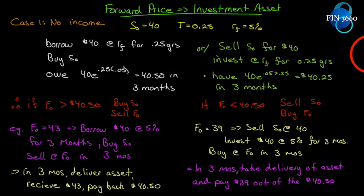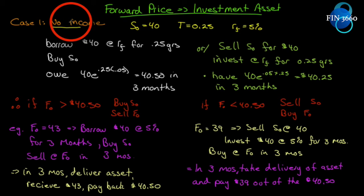Let's get right into how we find the futures price of a specific asset. We're going to do three cases. Case number one, as you can see up here, is no income — the underlying asset will produce no income. This will be the base case and the easiest one to figure out a price for. We'll use an arbitrage argument to prove what the price should be.